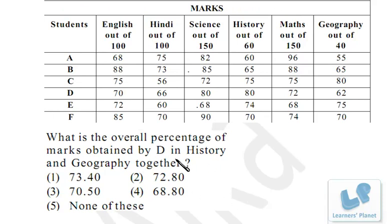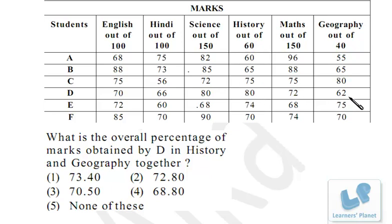Next question: what is the overall percentage of marks obtained by D in history and geography together? In history, D gets 80% of 60 marks, which is 48 marks. In geography, 62% of 40 is 24.8 marks. Total marks obtained: 48 + 24.8 = 72.8, out of 60 + 40 = 100. So the percentage is also 72.8. No paperwork required.